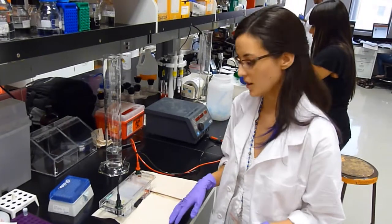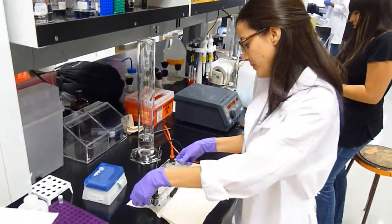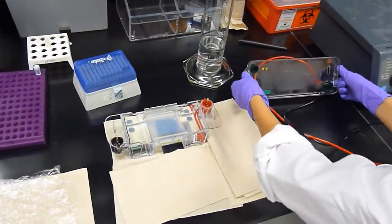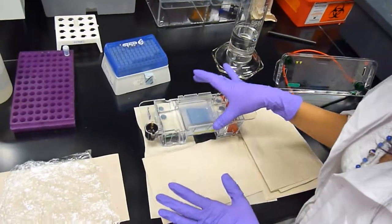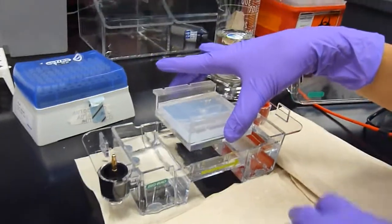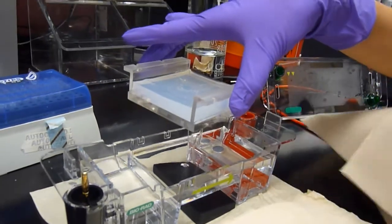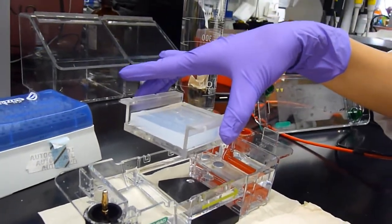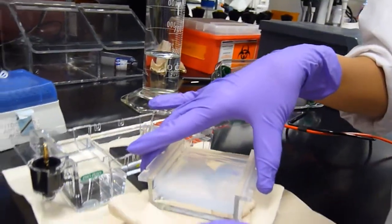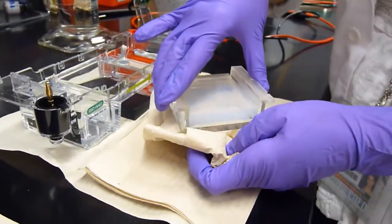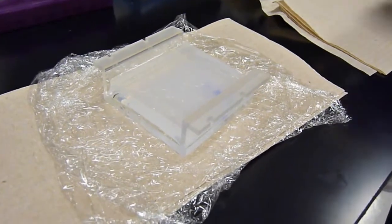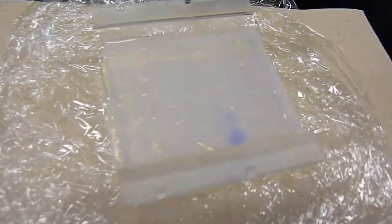So our gel has finished running. I'm just going to take it out of the tank. Make sure to unplug the lead before doing this, or else you might get electrocuted. Now carefully take out your gel. I'm just going to dry it off. But remember that all of this is contaminated with ethidium bromide, so you need to be careful. I'm going to transfer it to this plastic wrap. And we're going to take it downstairs for our visualization.